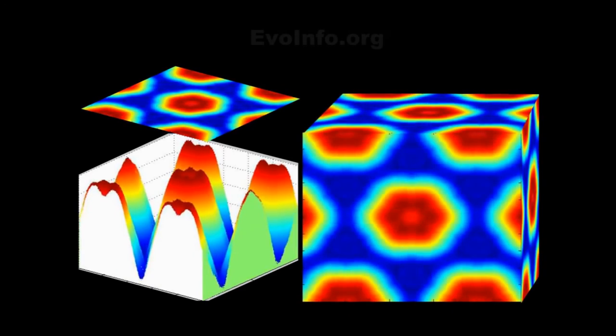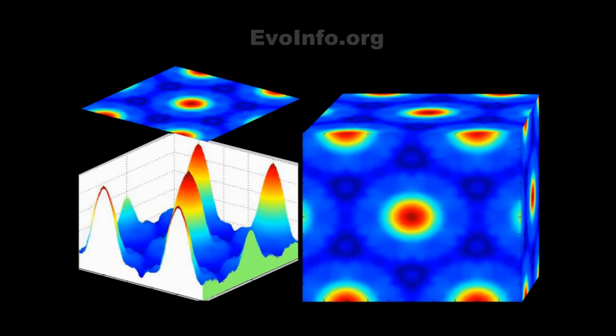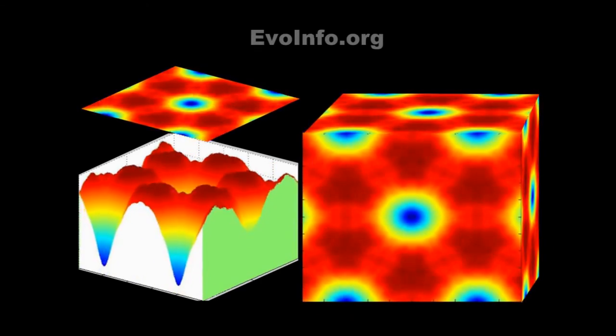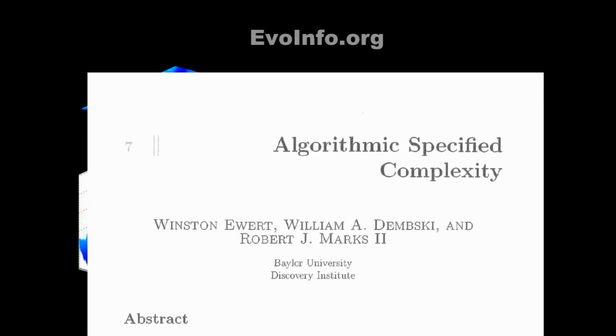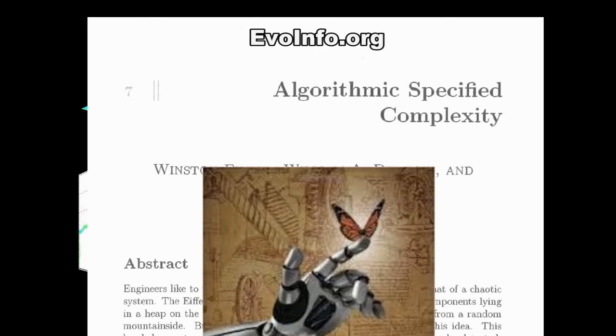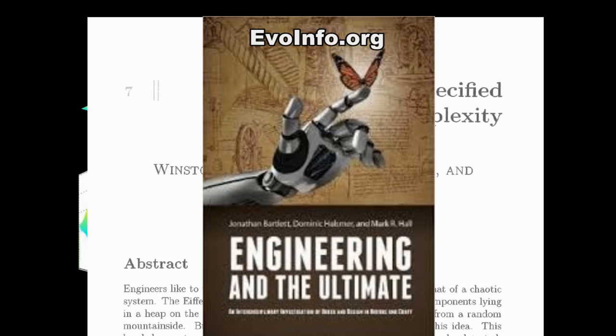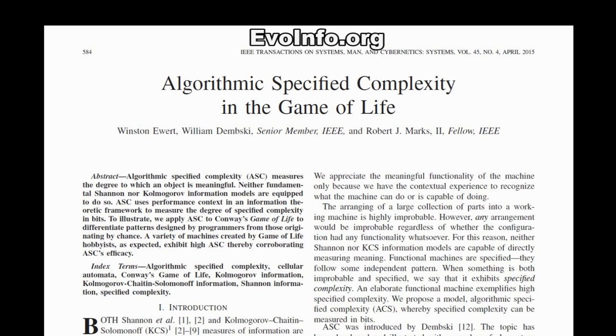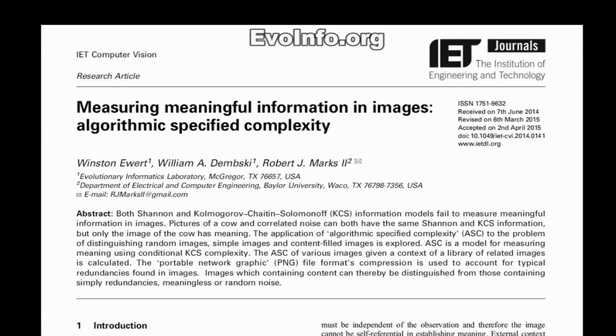So thank you, Dr. Ewert. I would remind everybody that if you want to dig in deeper to this and you want to get deep and dirty into the mathematics, there's three papers, all available on evoinfo.org. All three of them are by Dr. Ewert, Dr. William Dembski, and me. The first one is algorithmic specified complexity. The second paper is Algorithmic Specified Complexity in the Game of Life, published in the IEEE Transactions on Systems Man and Cybernetics in April 2015. The third paper, which we discussed on this podcast, is Algorithmic Specified Complexity, published in the IET Computer Vision Journal in 2015. This is Robert Marks signing off for ID the Future. Thank you for listening.